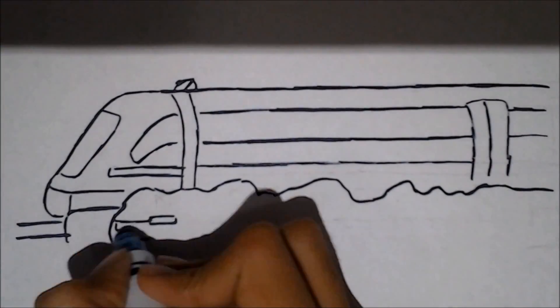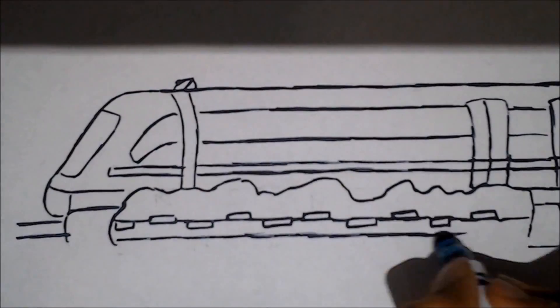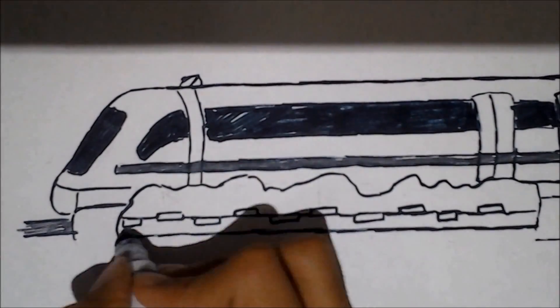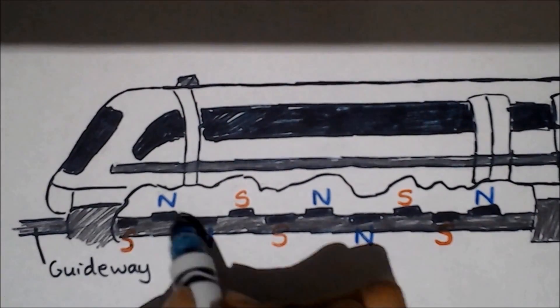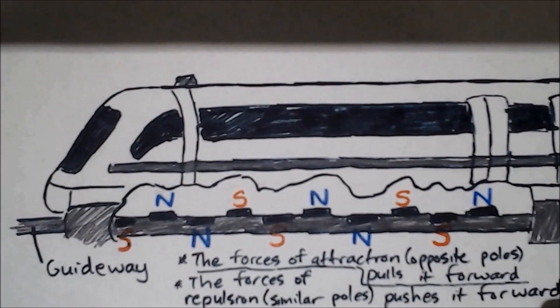The guidance magnet is an electromagnet which constantly reverses its poles depending on the direction of the current flow, which as a result causes the train to move and stop when needed.